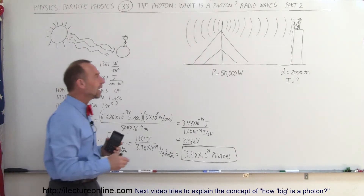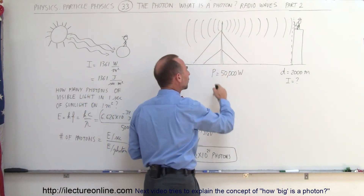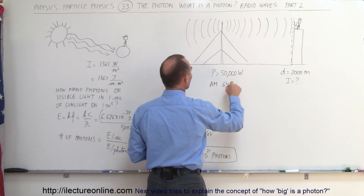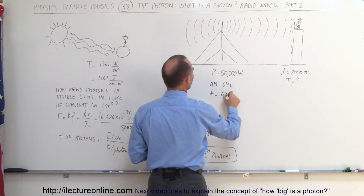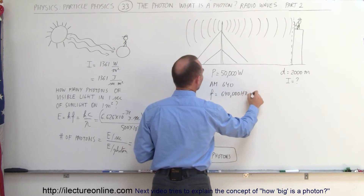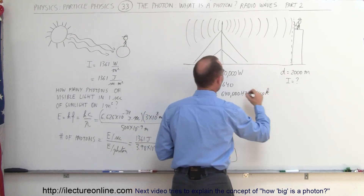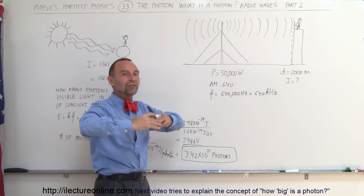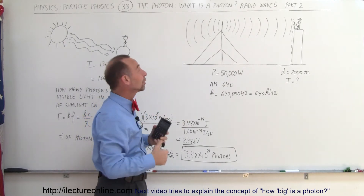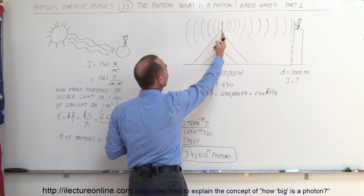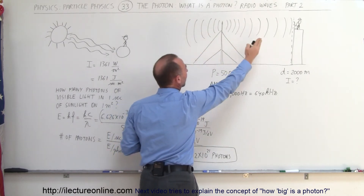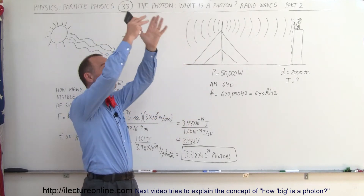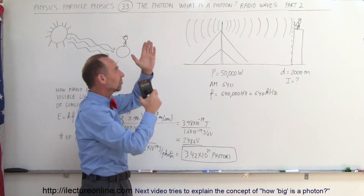Now let's say we have a radio broadcasting station that broadcasts at a power level of 50,000 watts. This is AM640, which means the frequency is 640,000 hertz, or 640 kilohertz. Let's say that power is equally distributed spherically in all directions — though typically, radial antennas are situated to have maximum radiation distribution in a horizontal band, with less energy directed straight up and straight down.